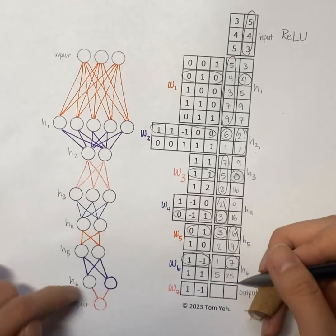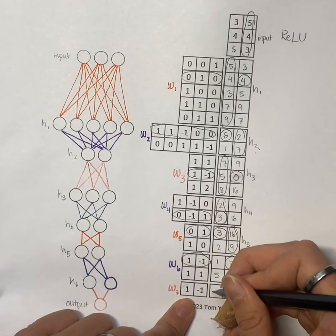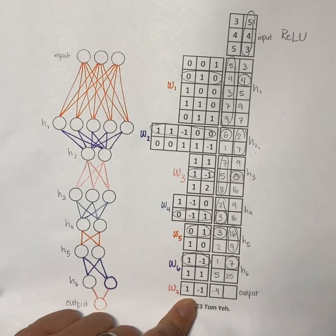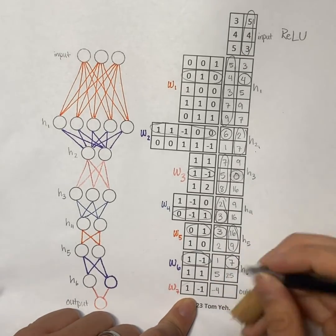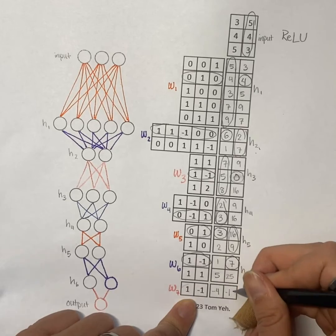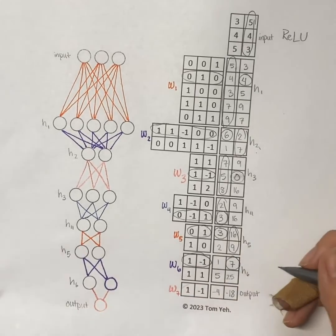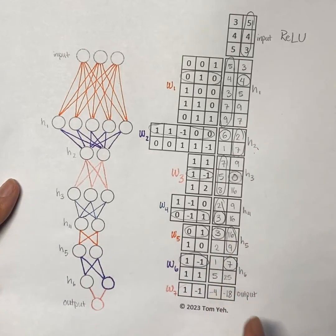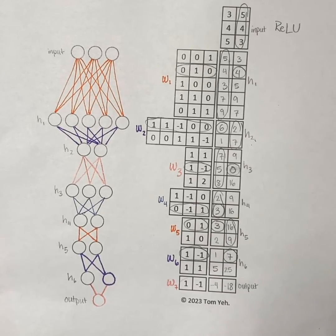And for the output, that's 1 minus 5, which is negative 4. And that is 7 minus 25, which is negative 18. So after this goes through ReLU, we will have 0, 0 for our output.